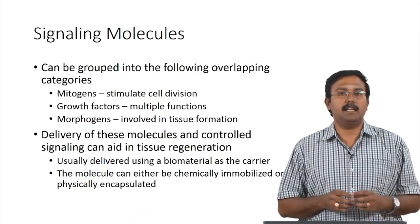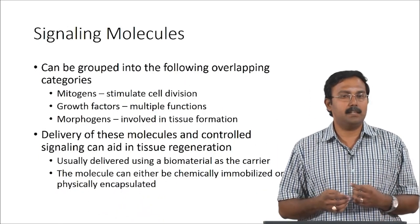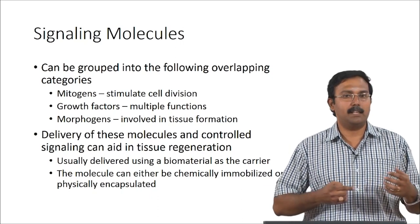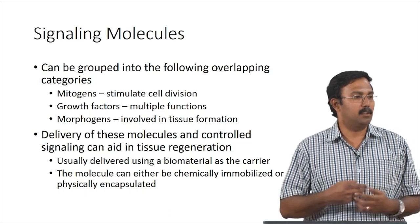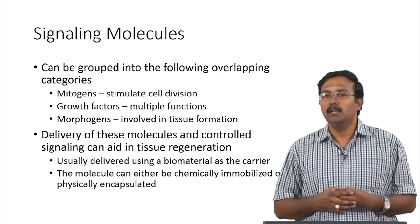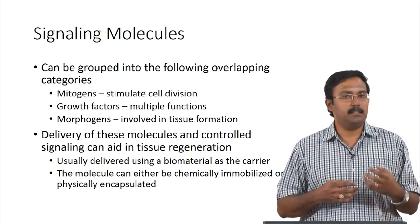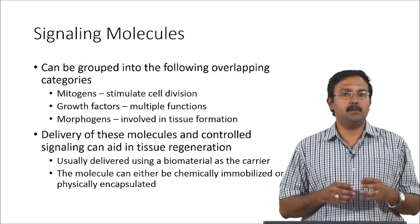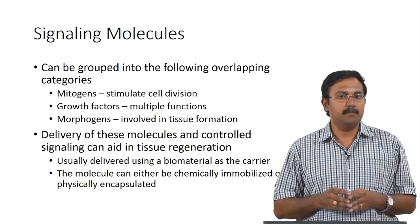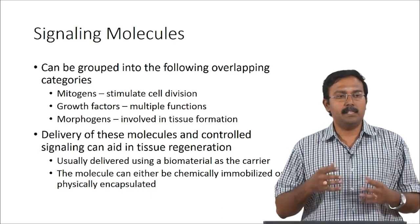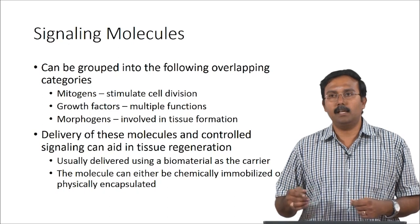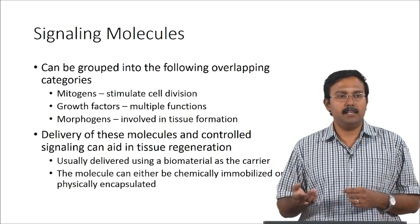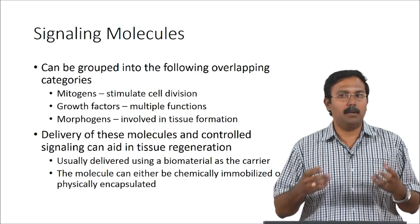Signaling molecules can be grouped into three major categories, but they are overlapping categories. Some molecules will act as both a mitogen and a growth factor, or a morphogen and a growth factor. These categories are mitogens, growth factors, and morphogens. Classically, mitogens are defined as those which stimulate cell division. Growth factors were initially identified as molecules that help in cell proliferation, and it was later identified that they can have multiple functions.